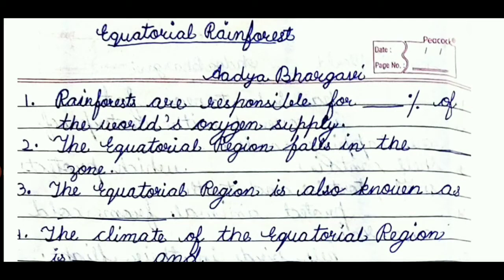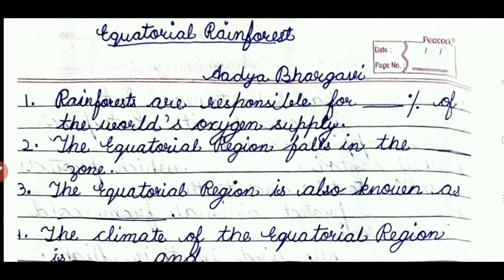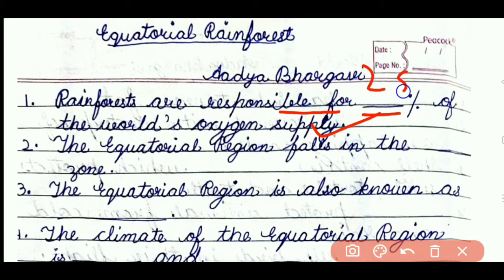Hi friends, I'm Adya. Today we are going to discuss all the one more questions on the topic equatorial rainforest. So without wasting any time, let's start. The first question is: rainforests are responsible for dash percent of the world's oxygen supply. The answer is 28 percent.